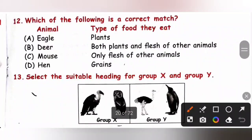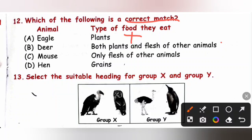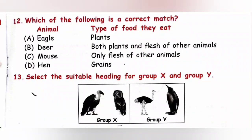Question 12: Which of the following is a correct match? Option A: Eagle — plant eater — incorrect, as eagles eat flesh. Option B: Deer — both plants and flesh — incorrect, as deer eat only plants. Option C: Mouse — only flesh — incorrect, as mice eat both plants and flesh. Option D: Hen — grains — correct. Option D is the correct answer.